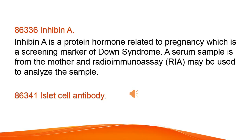Inhibin A is a protein hormone related to pregnancy which is a screening marker of Down syndrome. A serum sample is from the mother and radioimmunoassay, RIA, may be used to analyze the sample.